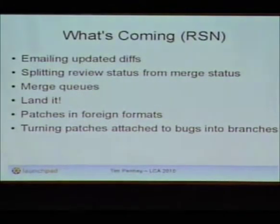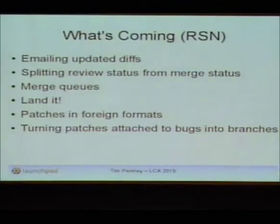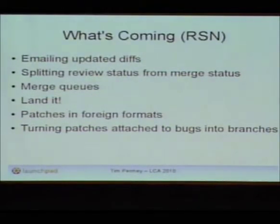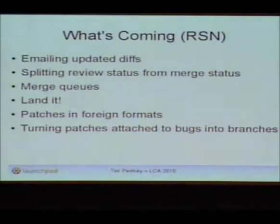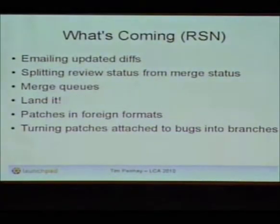Another thing I want to do is split out review status from merge status, because we only have one status at the moment. It's actually interesting to know historically if a review had been rejected that somebody else merged. At the moment if we only have status 'merged,' we've sort of lost the idea that someone actually rejected it. I'd like to split that out. Merge queues have been mostly in the tree for almost two years — we're just missing a UI. I want to have a 'land it' button, because at the moment when it's been approved, you have to grab the target, merge in the source, commit it, and push it back. Launchpad has all that information — it has the approvals, the commit message — it should be able to do it.